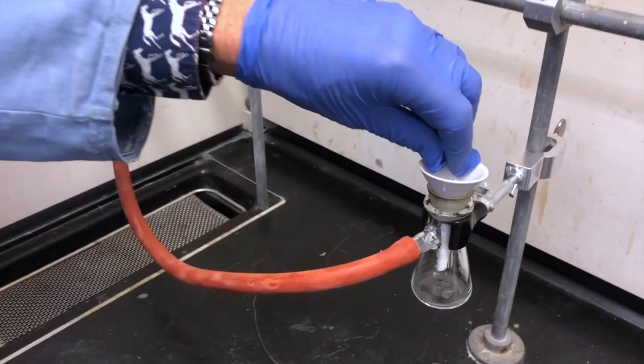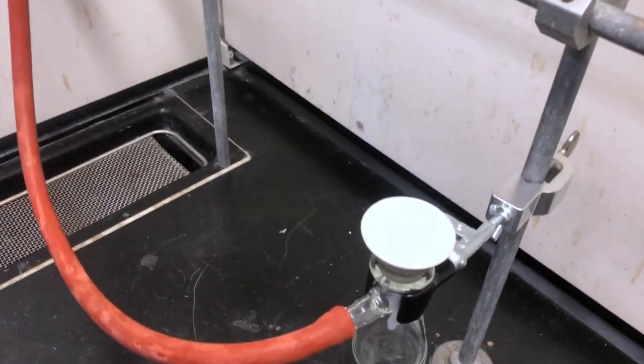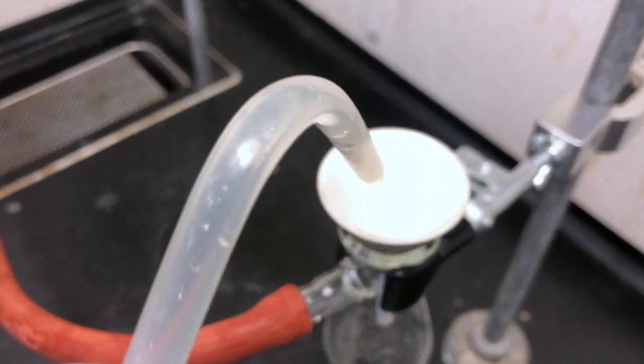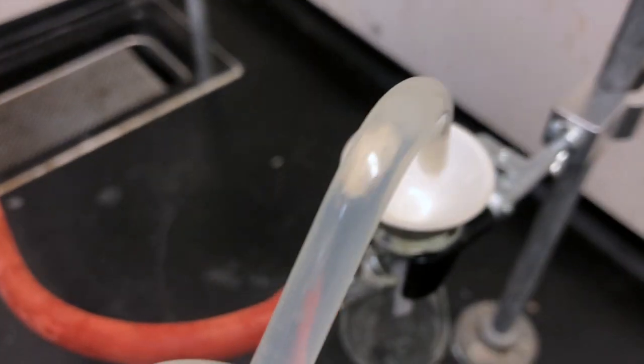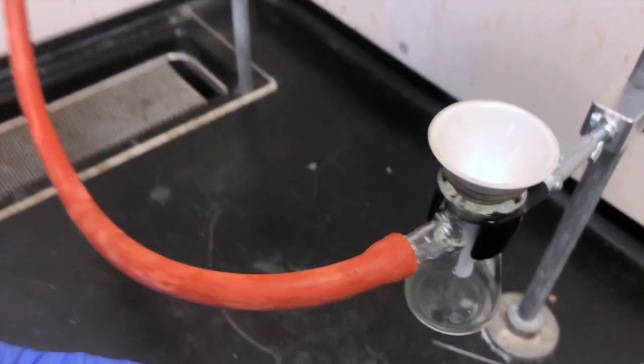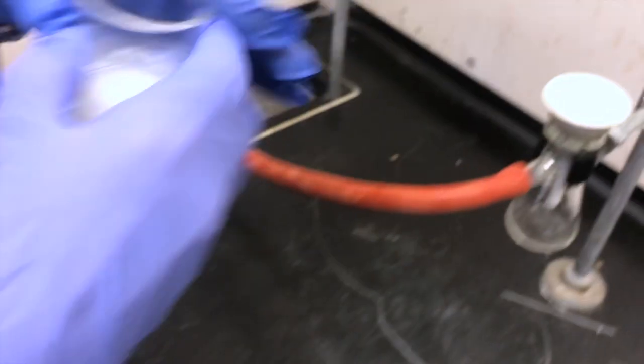At this point we can put our filter paper into the Hirsch funnel and we need to wet it slightly and suck a little bit of water through to hold the filter paper into place at the bottom. We want to block all the holes at the bottom of the funnel.